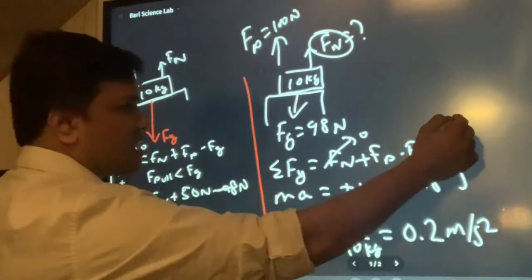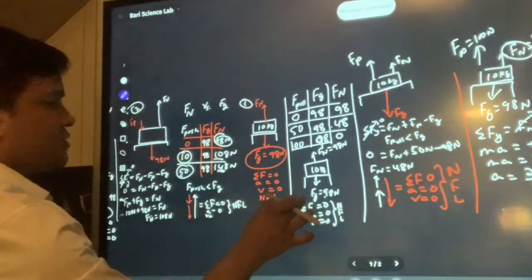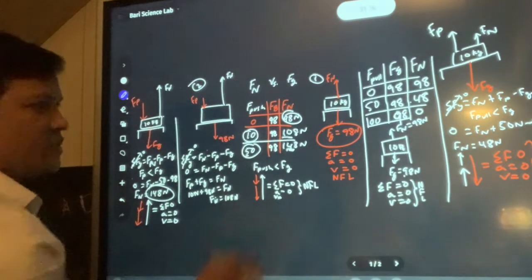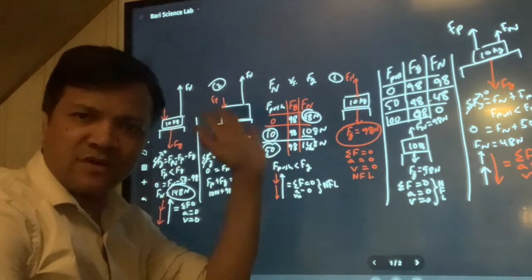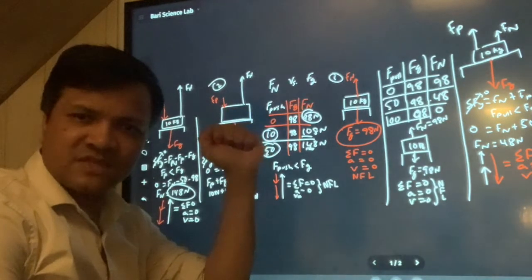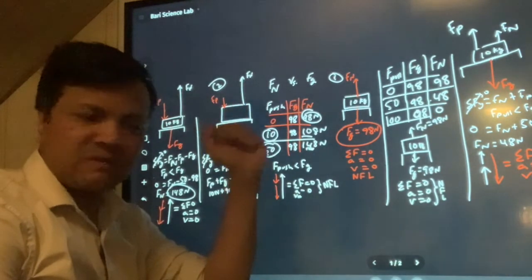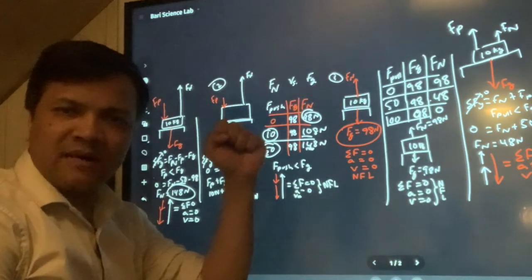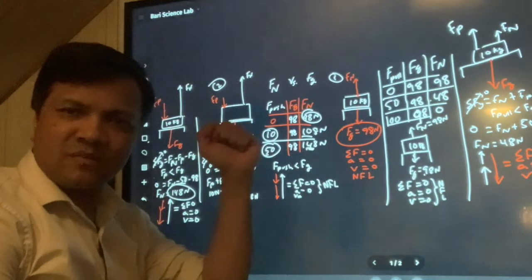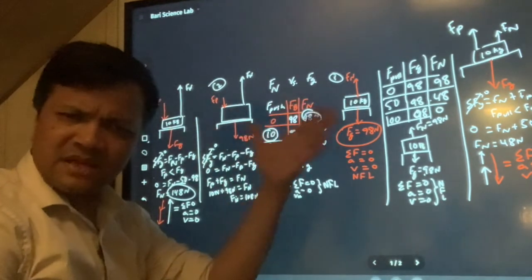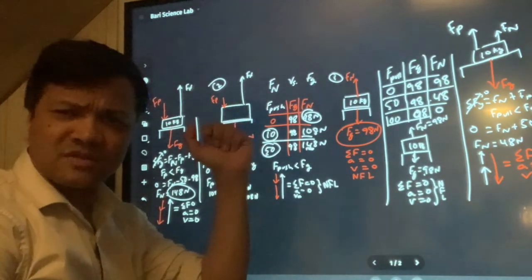To summarize: pushing the box does not affect its weight but does affect the normal force — the table has to exert more force to keep the box at rest. Pulling the box upward also doesn't affect the weight, but reduces the normal force. The more upward force you apply, the less force the table needs to exert, until the box lifts off and normal force becomes zero.